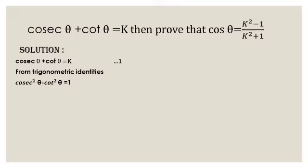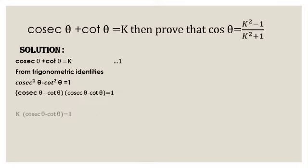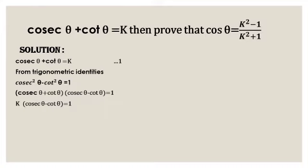Cosecant squared theta minus cot squared theta is like a squared minus b squared. So, cosecant theta plus cot theta into cosecant theta minus cot theta is equal to 1. Since cosecant theta plus cot theta equals k, we get k into cosecant theta minus cot theta is equal to 1. Transposing k, cosecant theta minus cot theta is equal to 1 by k. This is equation 2.